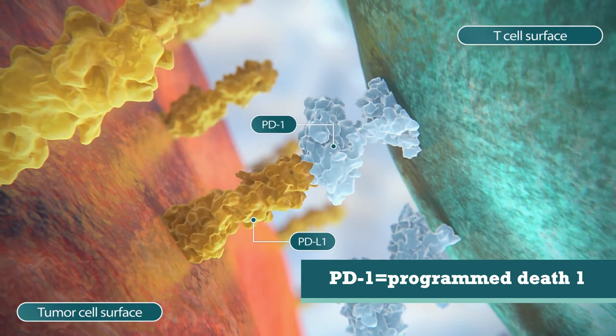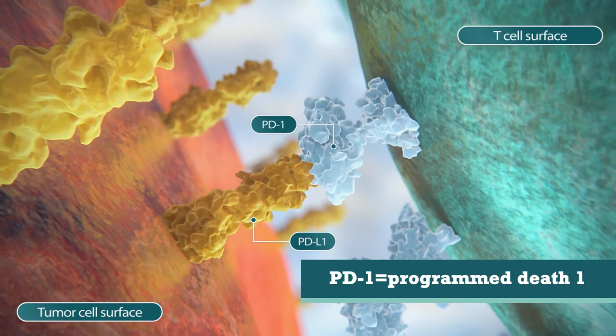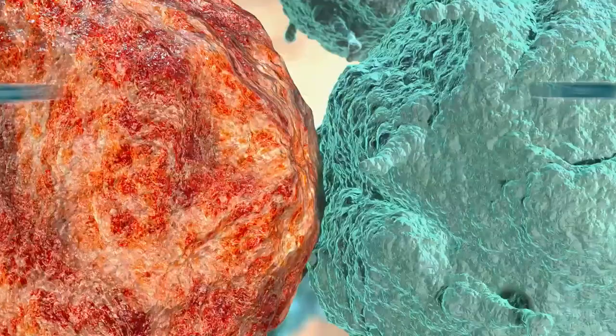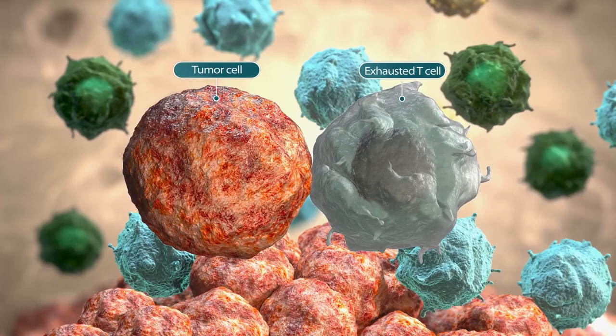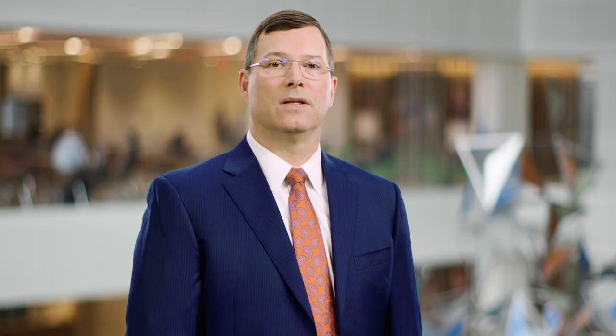PD-L1 binds to its receptor, PD-1, on immune cells such as T-cells. When PD-L1 binds to PD-1, it can negatively regulate T-cell activity, contributing to T-cell exhaustion, resulting in suppression of anti-tumor immunity.